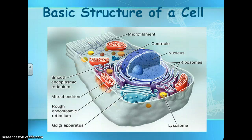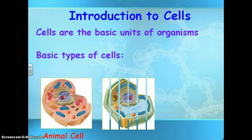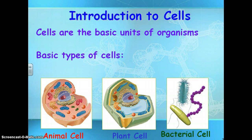Let's talk about the basics of cells. The basic structures of cells are the organelles, and we have a couple different kinds of cells. Cells are the basic units of all living things. The basic types of cells are animal cells, plant cells, and bacterial cells. Those bacterial cells are prokaryotic — they do not have a nucleus. Animal cells and plant cells are eukaryotic because they have a nucleus.